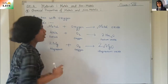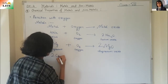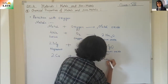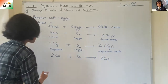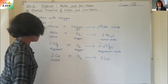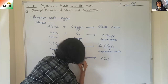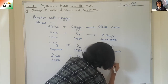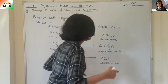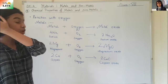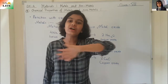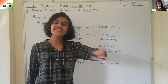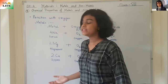Let's write down copper: 2Cu + O₂ gives two copper oxides, CuO. This process is known as corrosion — the slow eating away of a metal. Rusting is an example of corrosion; the copper also gets eaten away and forms a dull green looking structure — that is copper oxide.